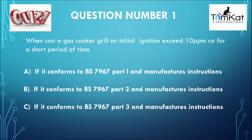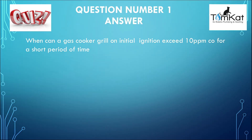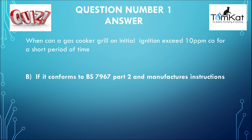Let's get on with it and find out if you got 10 out of 10. Looking at the answer for question number one: when can a gas cooker grill on initial ignition exceed 10 parts per million CO for a short period of time? The answer is B — if it conforms to BS 7967 Part 2 and manufacturer's instructions. That was the answer for question number one.